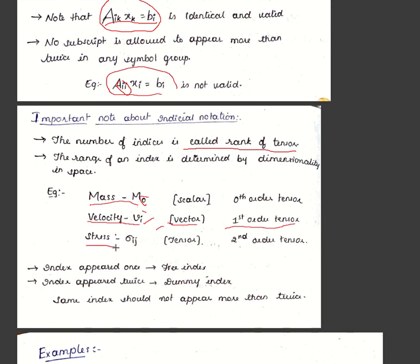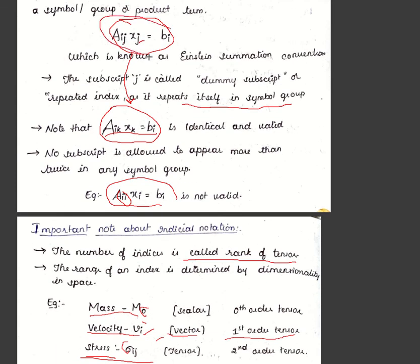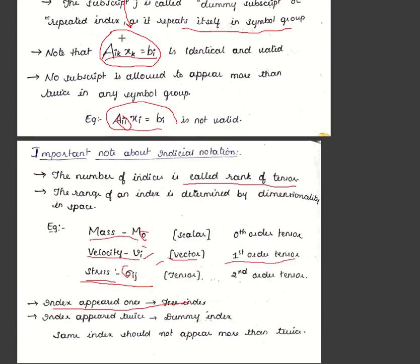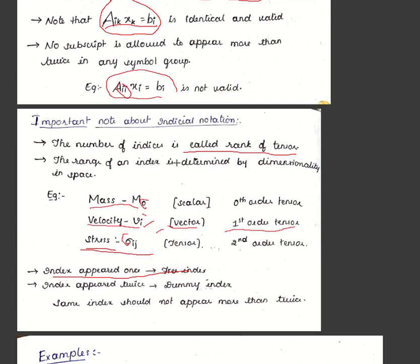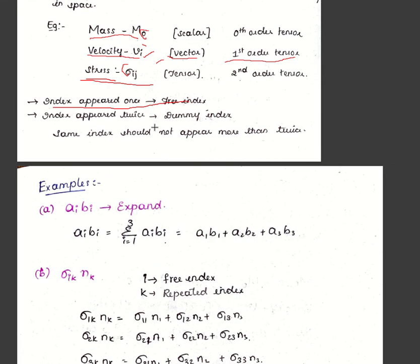Stress σij has one magnitude σ and two directions i and j, making it a second-order tensor. When we say 'tensor,' we generally refer to a second-order tensor. An index appearing only once is called a free index. In the expression aij·xj = bi, j is the dummy index (repeated twice) and i is the free index (appearing once). An index must not appear more than twice.